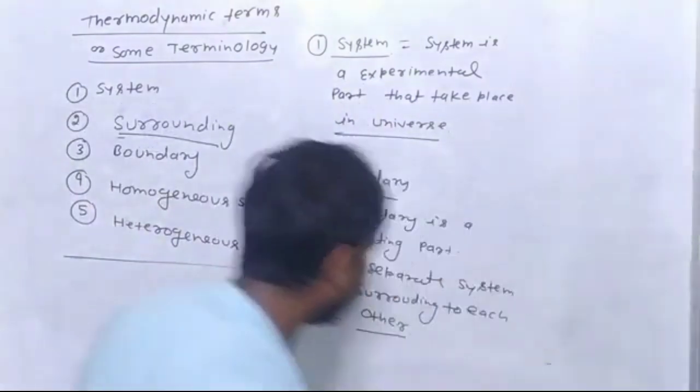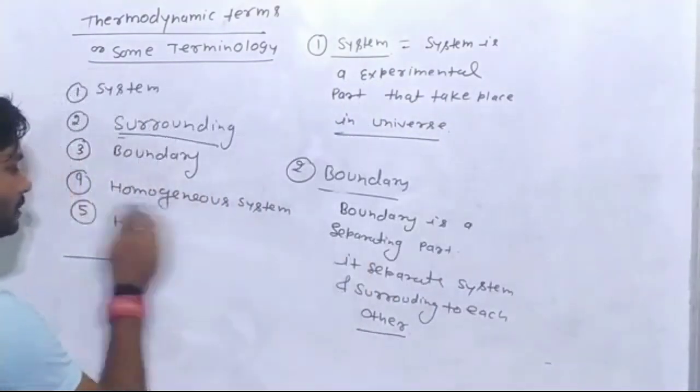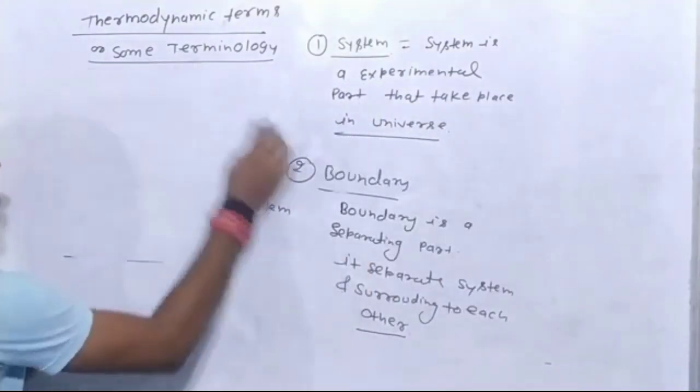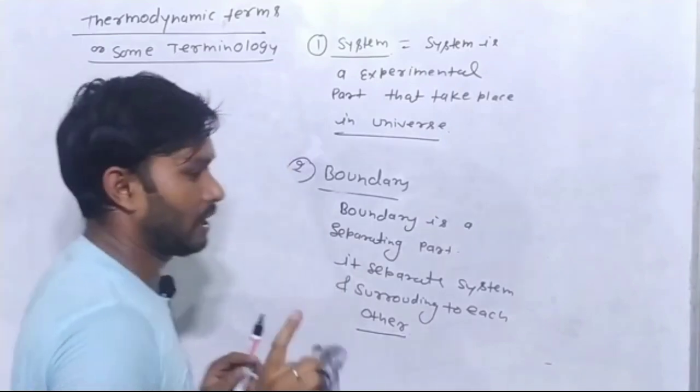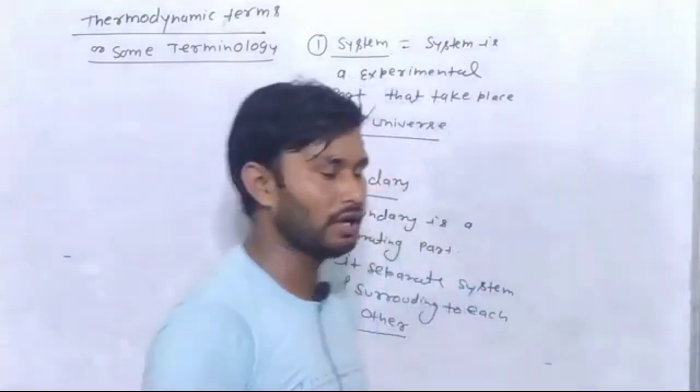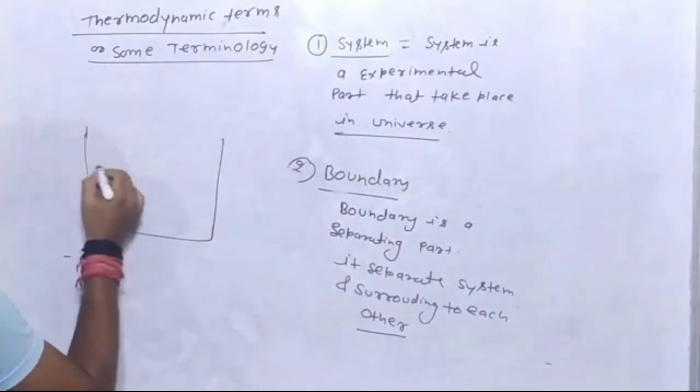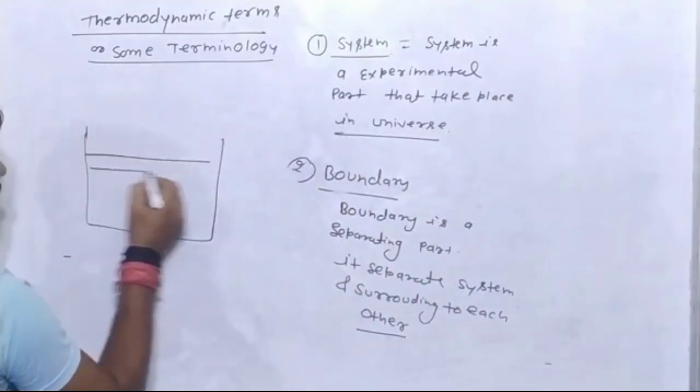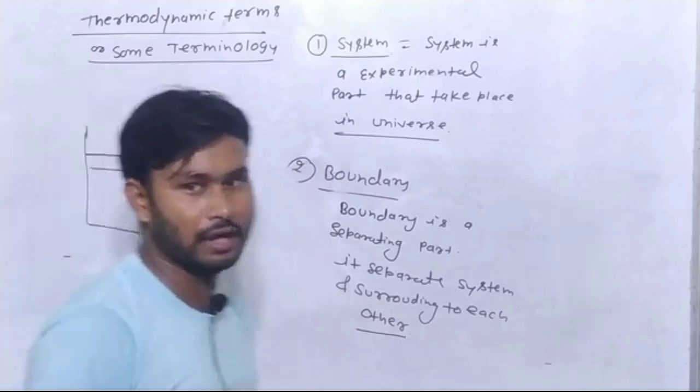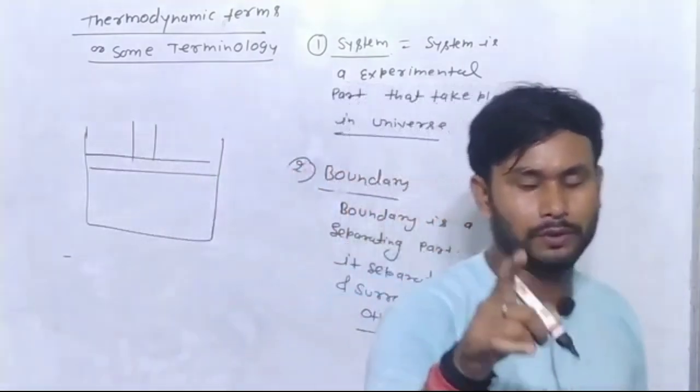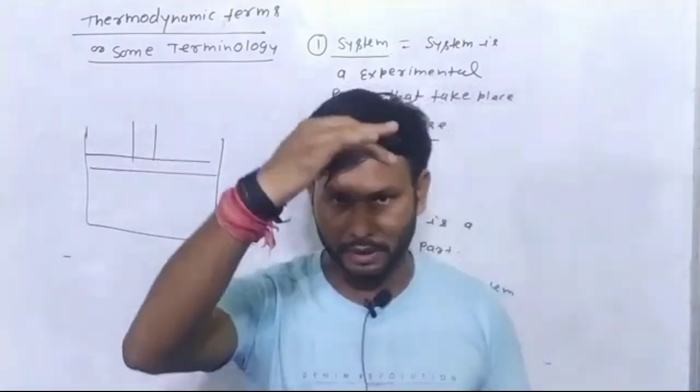The rigid boundary and flexible boundary is the difference. When the system is used, we create a cylinder. We have a cylinder, we have a piston, we have a moveable. This means we move to the upper and lower.